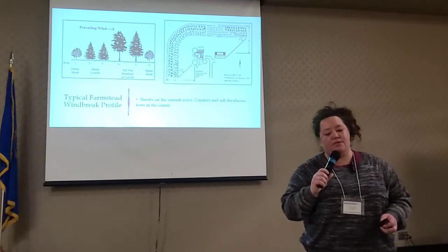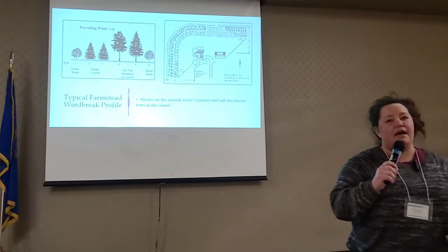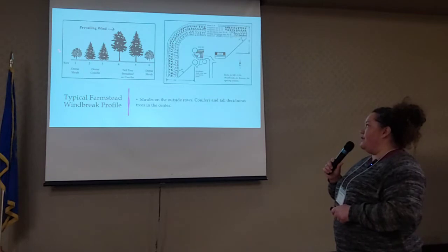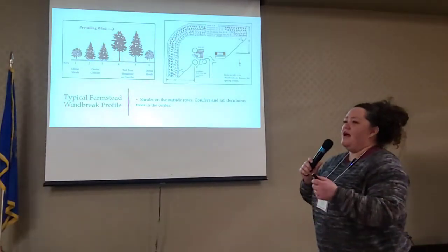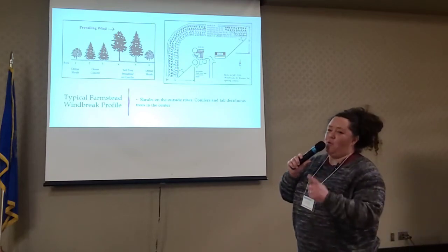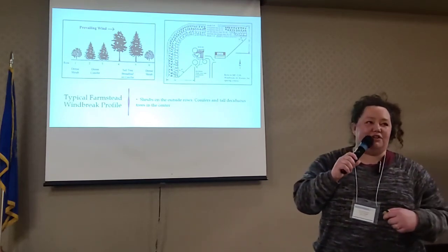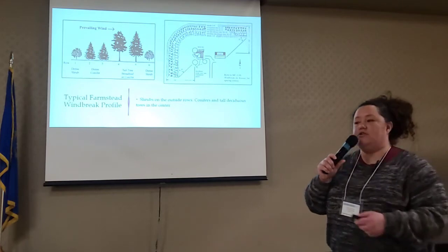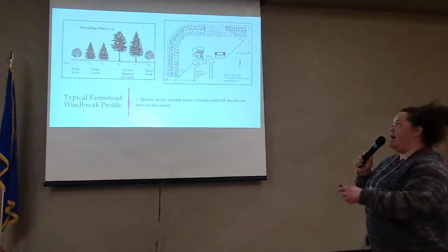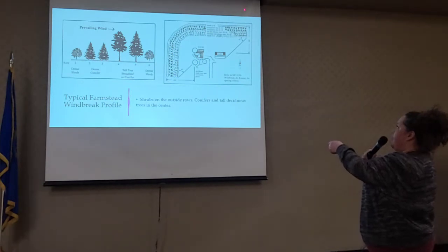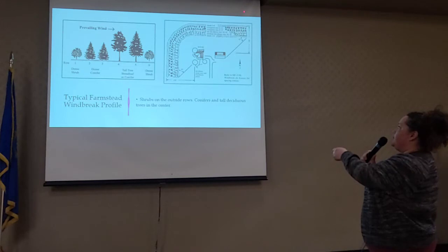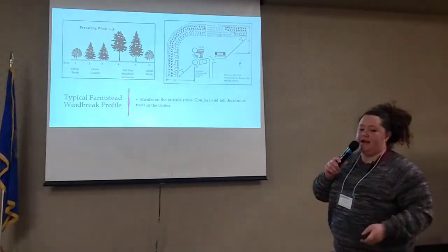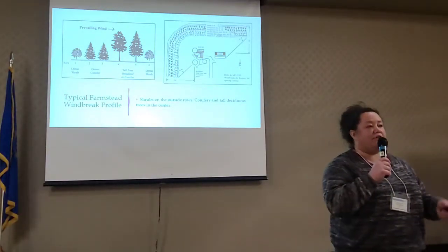On a typical farmstead windbreak, we're looking at a minimum of five rows. I usually put a suckering shrub on the outside on the windward row, a couple of conifer rows. In my area we don't have a lot of deciduous trees that'll grow, so I usually stick to one, and then another suckering shrub on the leeward row. You can put as many rows out there as you want. You can also space out your rows so that you have a wind catch — put a row another 100 feet out, something like a suckering shrub and maybe a conifer. You would get a lot of snow piled up in there, and then that primary windbreak would catch the rest of the snow and add greater protection.